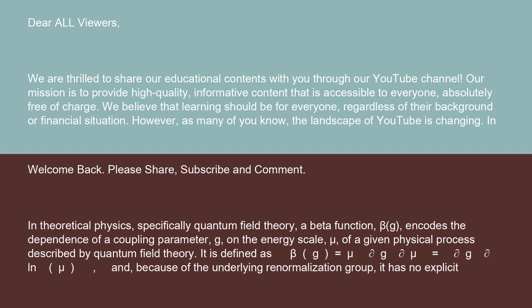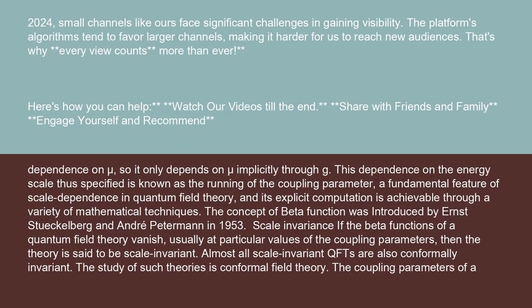It is defined as β(g) = μ ∂g/∂μ = ∂g/∂ln(μ). Because of the underlying renormalization group, it has no explicit dependence on μ, so it only depends on μ implicitly through g. This dependence on the energy scale is known as the running of the coupling parameter.